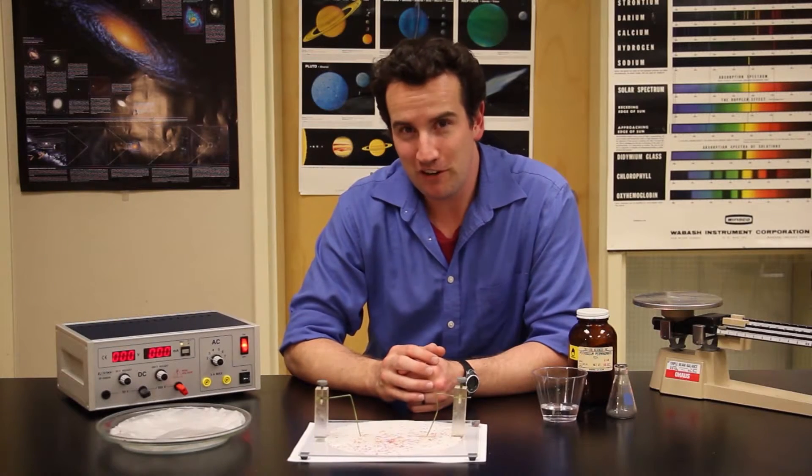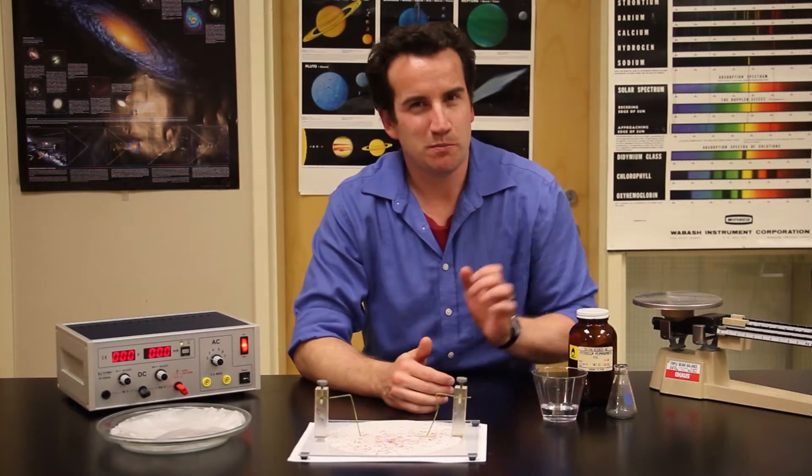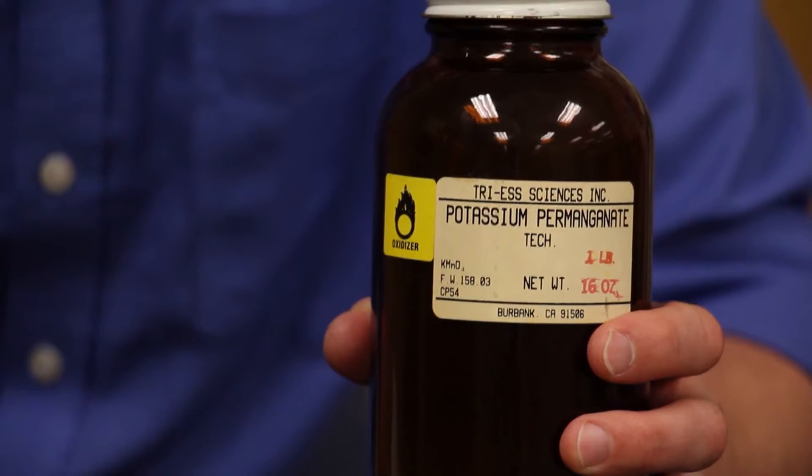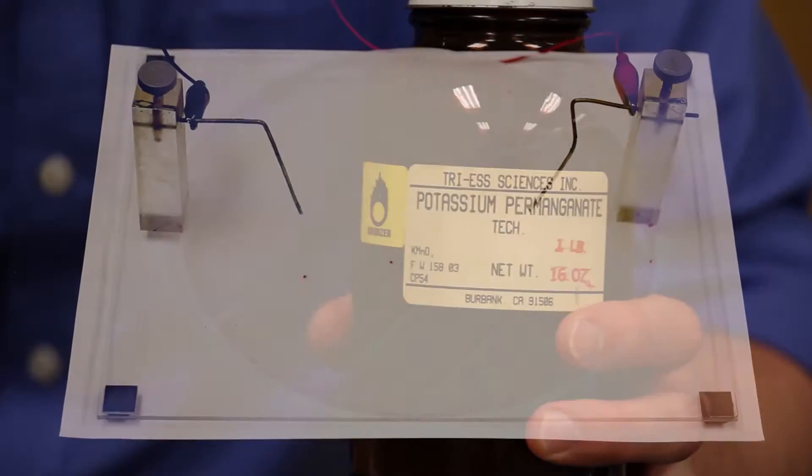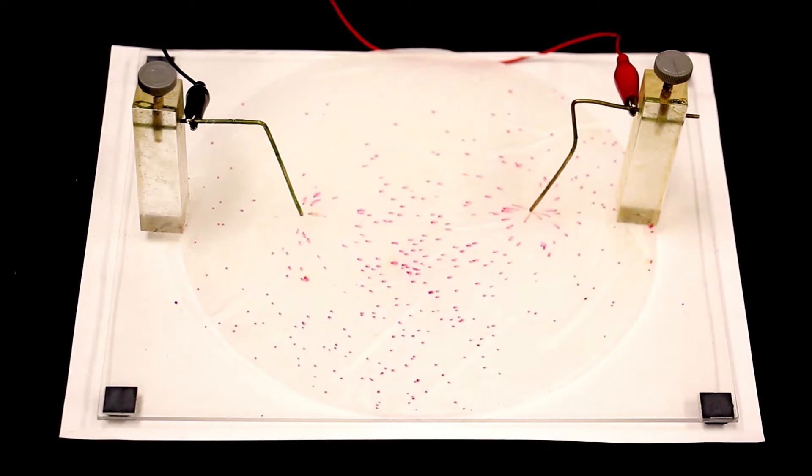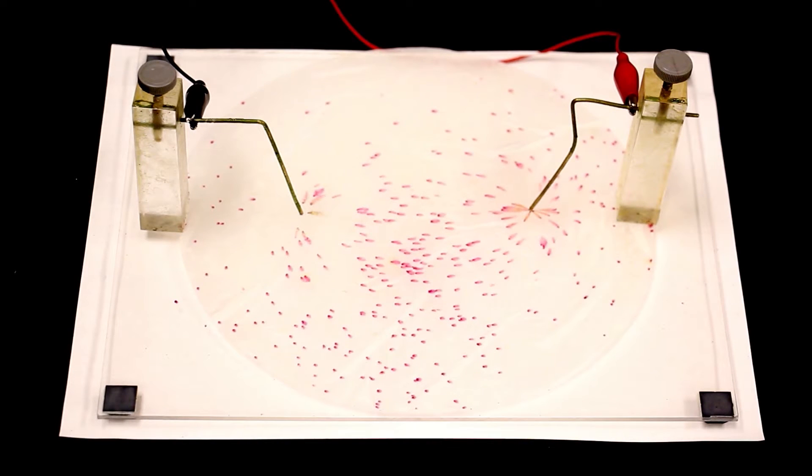You can vividly trace the flow of ions in an electric field with some potassium permanganate crystals that you borrow from your chemistry teacher. Inserting two electrodes and putting them to a high voltage generates these beautiful purple lines.